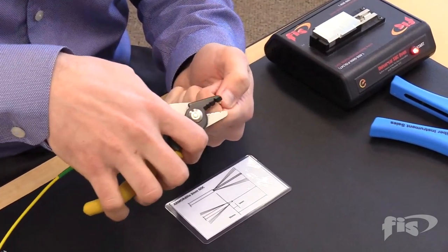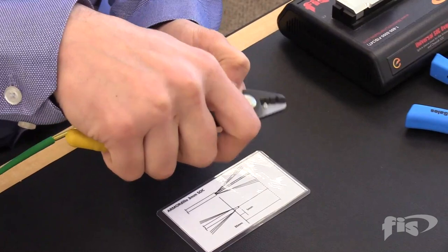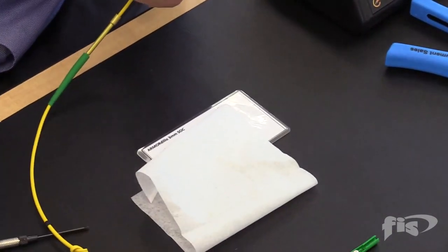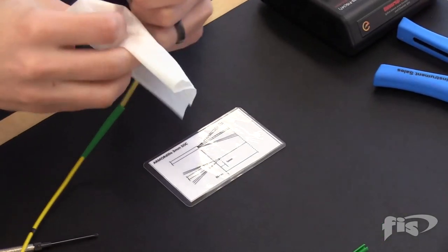After removing the 900-micron jacket, use the 250-micron slot of the stripper and remove the acrylate coating. To clean the fiber, use 99% isopropyl alcohol and a low-lint wipe.